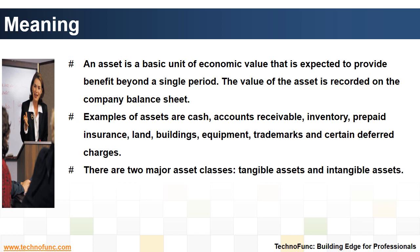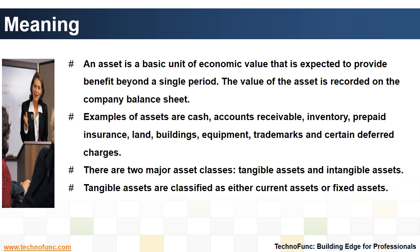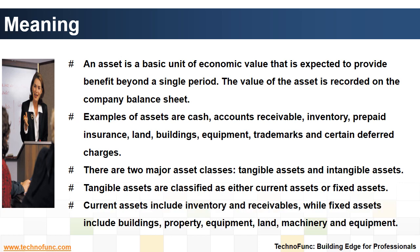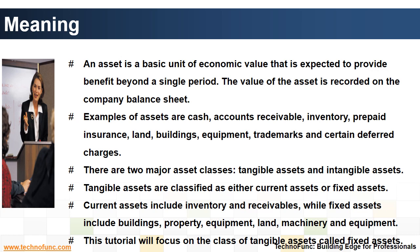There are two major asset classes: tangible assets and intangible assets. Tangible assets are classified as either current assets or fixed assets. Current assets include inventory and receivables, while fixed assets include buildings, property, equipment, land, and machinery. This tutorial will focus on the class of tangible assets called fixed assets.